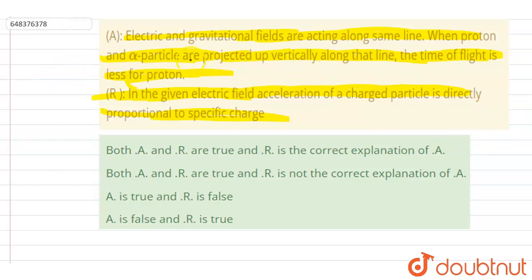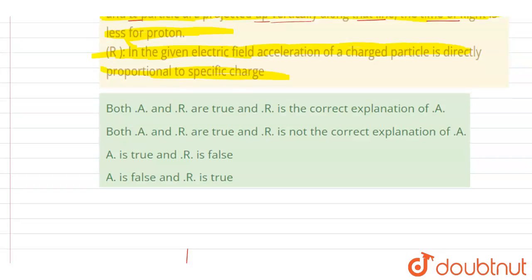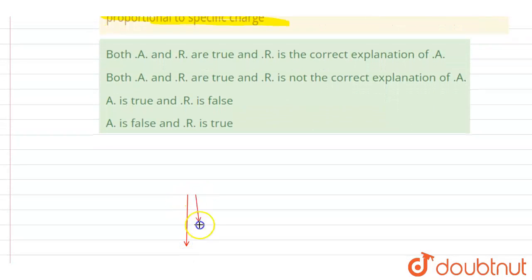They both are acting along the same line. When the proton and the alpha particle are projected up vertically along that line, you have to find what the time of flight will be. The gravitational field and the electric field are in the same direction, as stated in the question. The gravitational field will be g and the electric field is e.